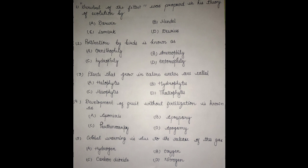The fifth question: global warming is due to the release of which gas? Option A: hydrogen, Option B: oxygen, Option C: carbon dioxide, Option D: nitrogen. The answer is carbon dioxide. The greenhouse effect is a naturally occurring phenomenon that leads to heating of the Earth's surface. Other greenhouse gases include CFCs (chlorofluorocarbons), N2O, and CH4. Thank you.